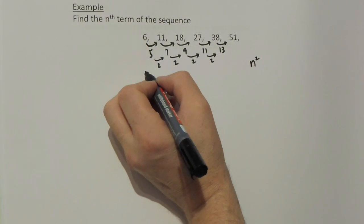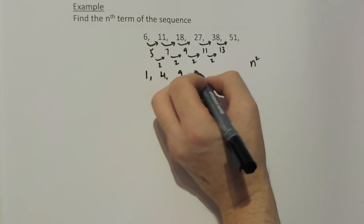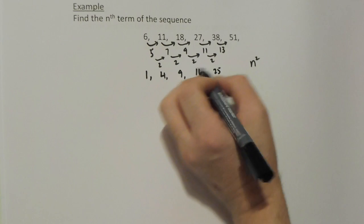If I write n squared down, that's 1 times 1, 2 times 2, 3 times 3, 4 times 4, 5 times 5, etc.